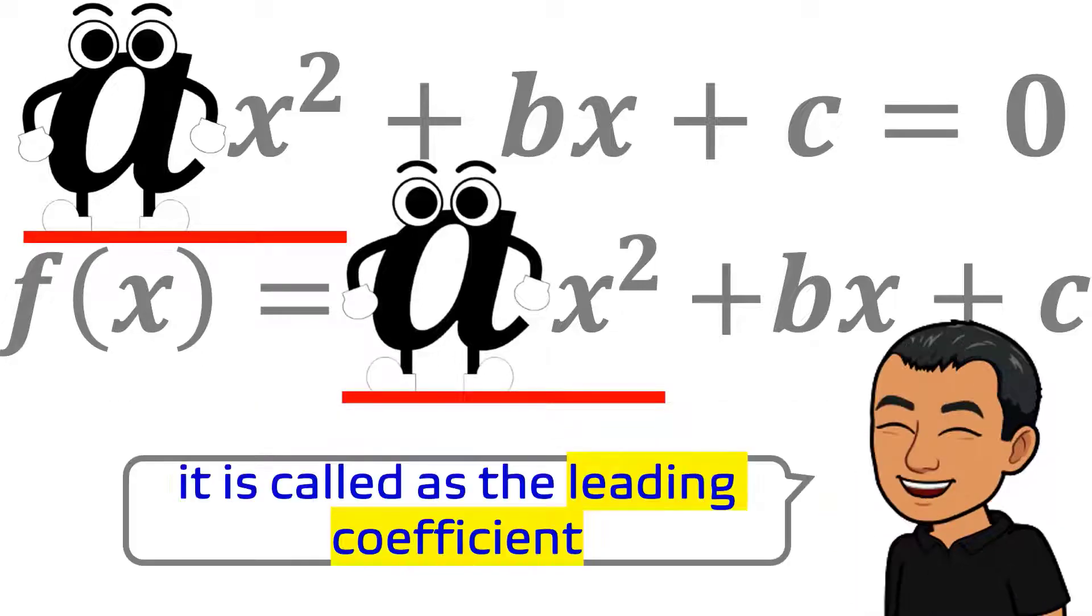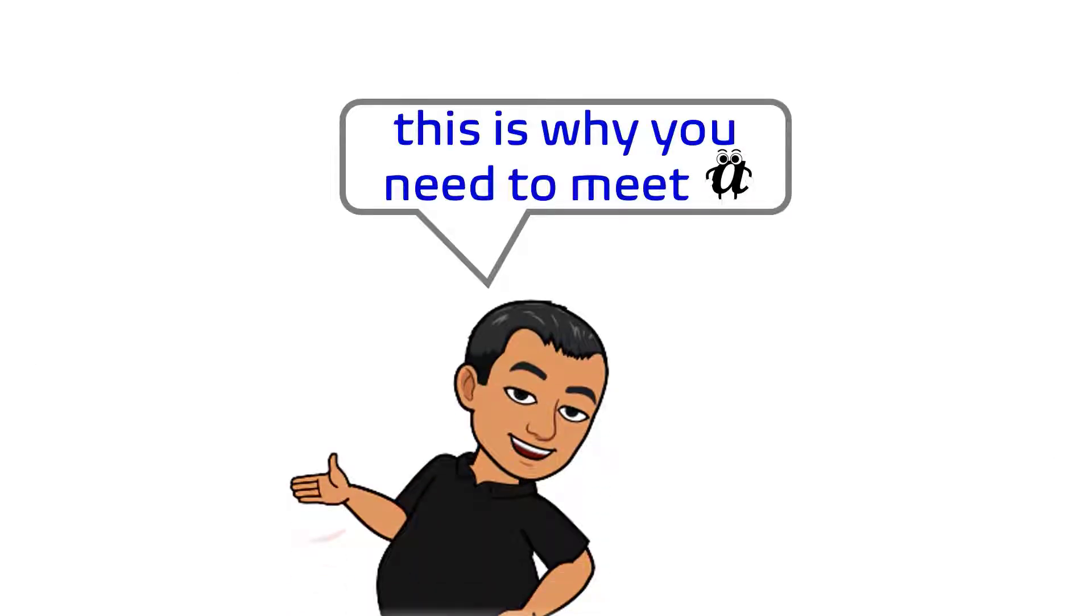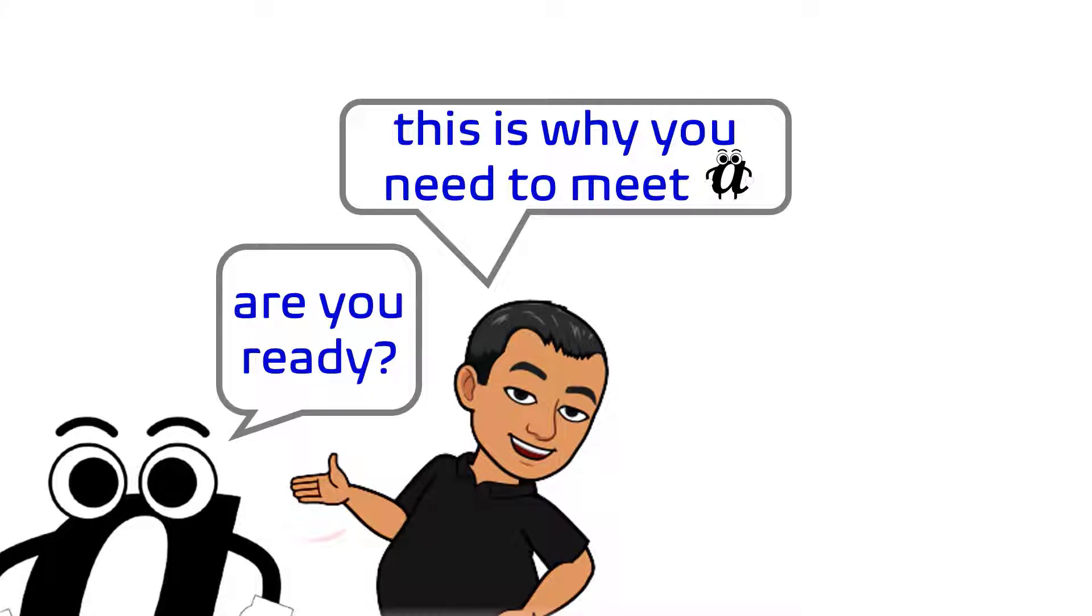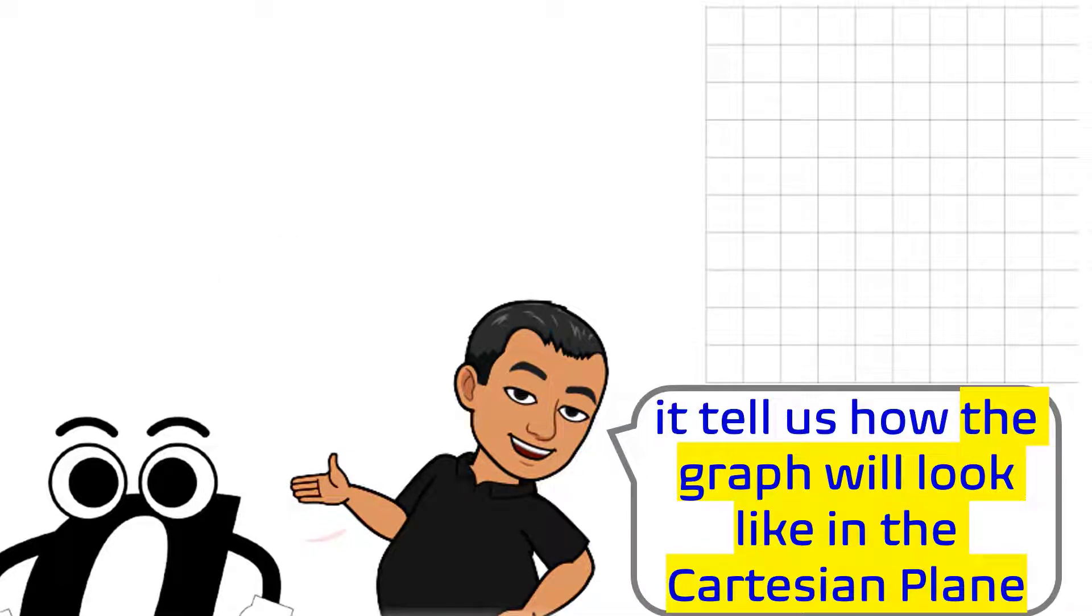A is called the leading coefficient. This is why you need to meet A. Are you ready? It tells us how the graph will look like in the Cartesian plane.